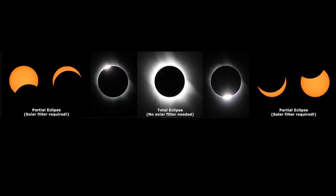It is not safe to look directly at the Sun without protection during an eclipse, except during the point of totality. This starts when the last light of the Sun is disappearing and ends as it reappears. During totality, the Sun's corona is visible, and this is one of the most spectacular sights that can be observed without a telescope.